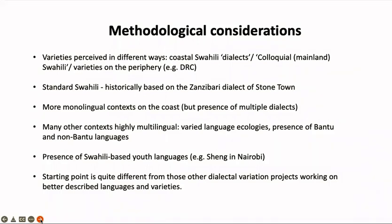Many of the other contexts are highly multilingual, with varied language ecologies and different languages present — one of the things we're interested in but also conscious of in trying to understand the variation we find in Swahili. From a purely practical perspective, if we're conducting research in Swahili, what role does that have on the data we collect? If we use English or other languages, what influence will that have in these multilingual contexts?